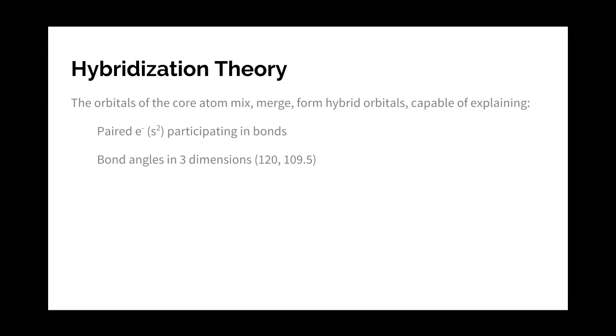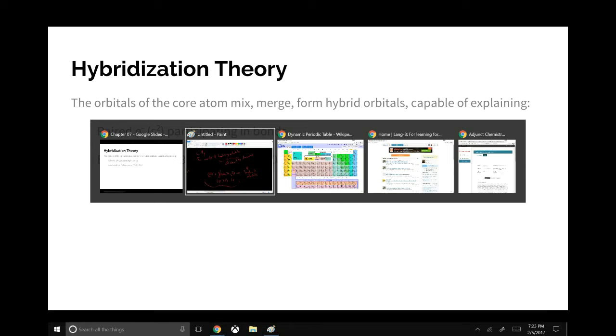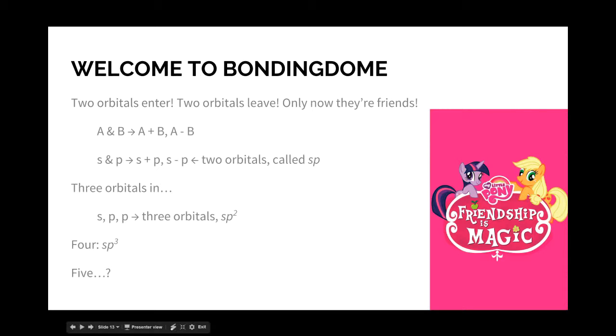And this also explains our bond angles in three dimensions, because these hybrid orbitals, when you do that nasty three-dimensional math, match our expectations from other three-dimensional math. It explains the 120 degrees of trigonal planar, it explains the 109.5 degrees of tetrahedral, even though those don't show up in the basic orbitals themselves.